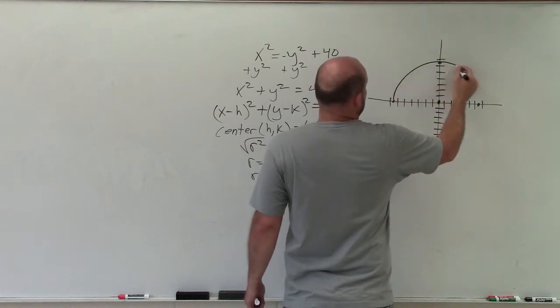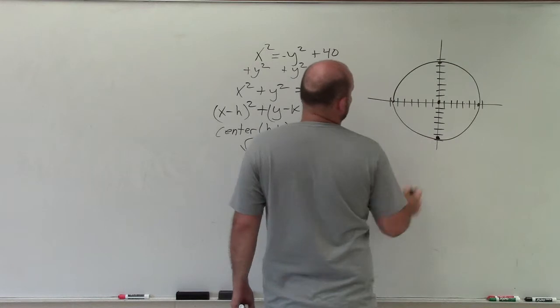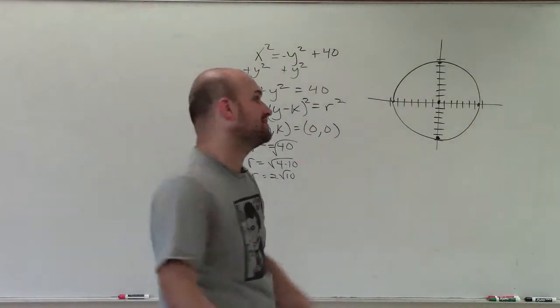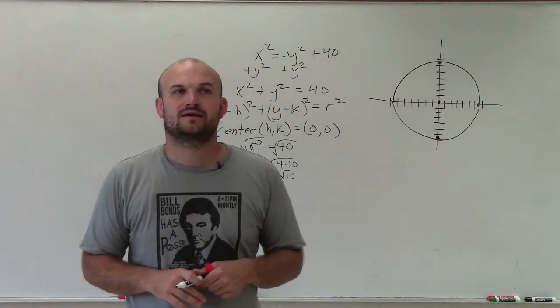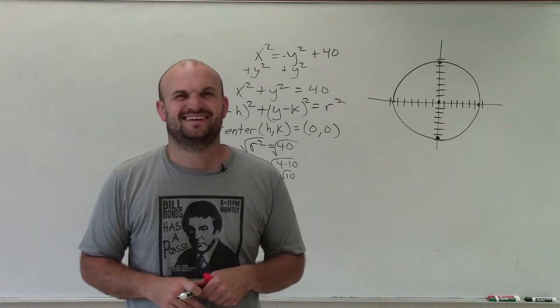So I'm just kind of estimating and then drawing a beautiful circle through all those points. So there you go, ladies and gentlemen. That is how you graph an equation when given a circle equation to graph. Something like that. Thanks.